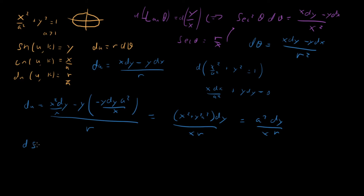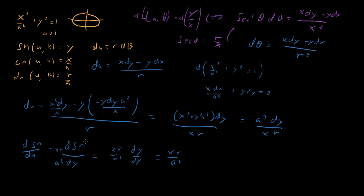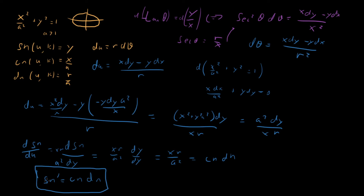Now we can compute dsn/du. Since du = a² dy / (xr), we have dsn/du = dsn/dy · (a²/(xr))⁻¹... but sn = y, so d(sn)/dy = 1, giving dsn/du = xr/a². Now x/a = cn and r/a = dn, so dsn/du = cn · dn. Boxed result: sn′ = cn · dn.